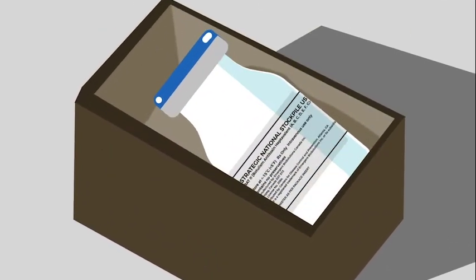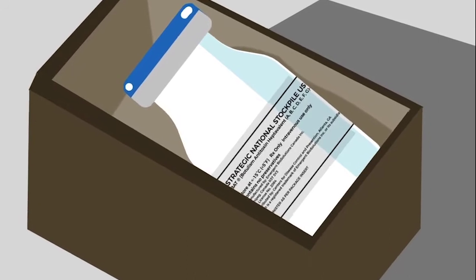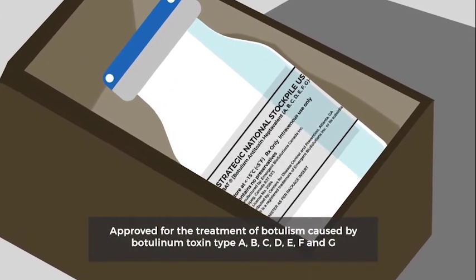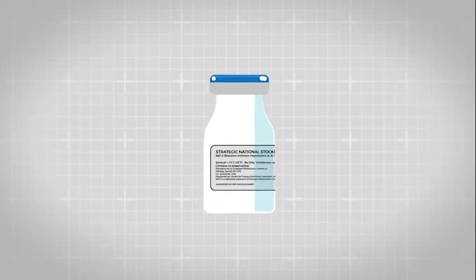Botulism antitoxin is made from the plasma of horses. It has antibodies that neutralize the toxins. FDA has approved the antitoxin for the treatment of botulism caused by botulinum neurotoxins type A, B, C, D, E, F, and G in people of all ages. An illustrated box appears. The box lid is removed to reveal a bottle of botulism antitoxin. The antitoxin is a clear colorless liquid.